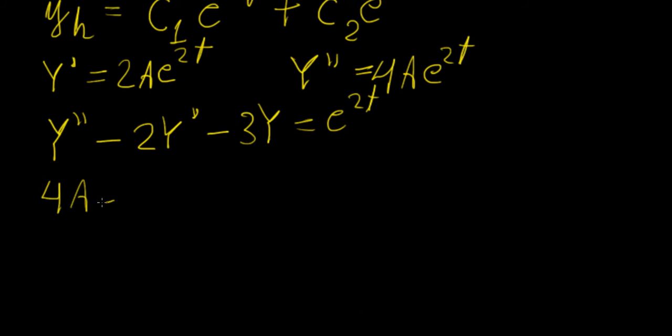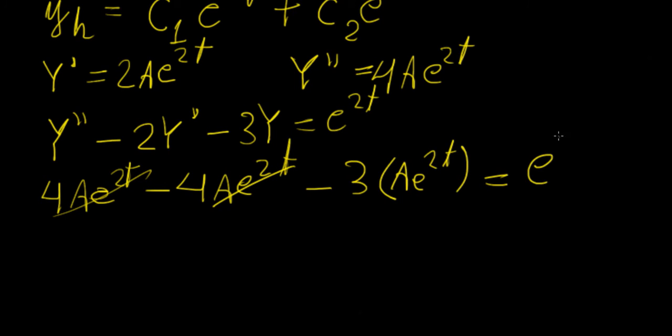We're going to substitute these values in. That's 4A e to 2t minus 2 times that, which is 4A e to 2t. Now immediately these two cancel out, and minus 3 times y. So y was originally A e to 2t, and that's going to be equal to e to 2t. In the end these two terms are going to cancel out, and to solve for A, we get A equals to minus 1 over 3.